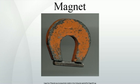Two different models exist for magnets: magnetic poles and atomic currents. Although it is convenient to think of a magnet as having distinct north and south magnetic poles, the concept of poles should not be taken literally — it is merely a way of referring to the two different ends of a magnet. The magnet does not have distinct north or south particles on opposing sides. If a bar magnet is broken into two pieces in an attempt to separate the north and south poles, the result will be two bar magnets, each of which has both a north and south pole.